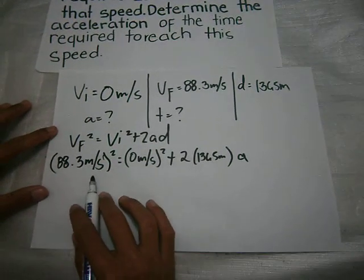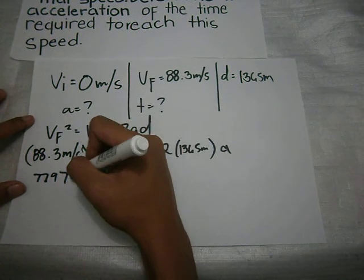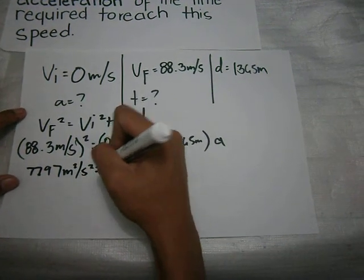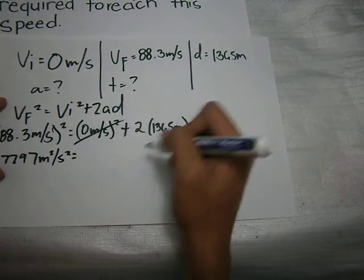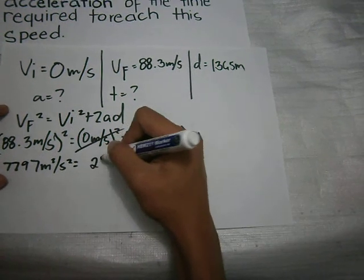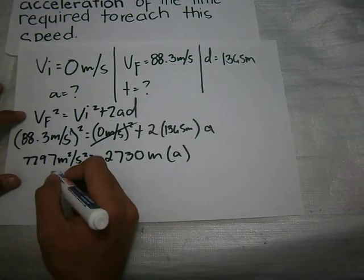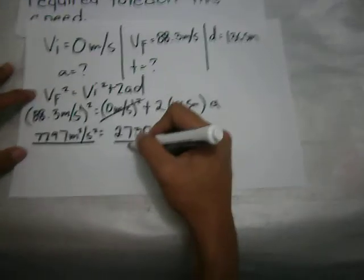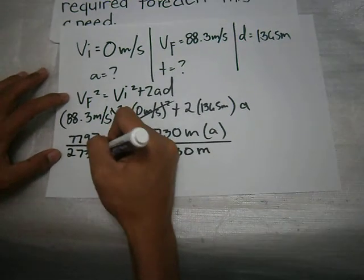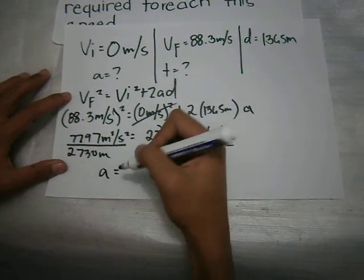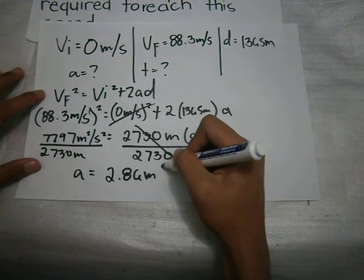88.3 meters per second squared is equal to 7797 meters squared per second squared. We cancel terms, giving us 2730 meters. Then we divide both sides by 2730 meters. Canceling, acceleration A is equal to 2.86 meters per second squared.